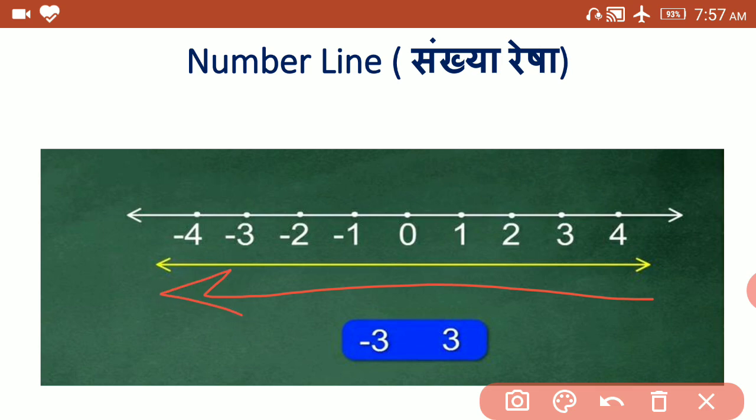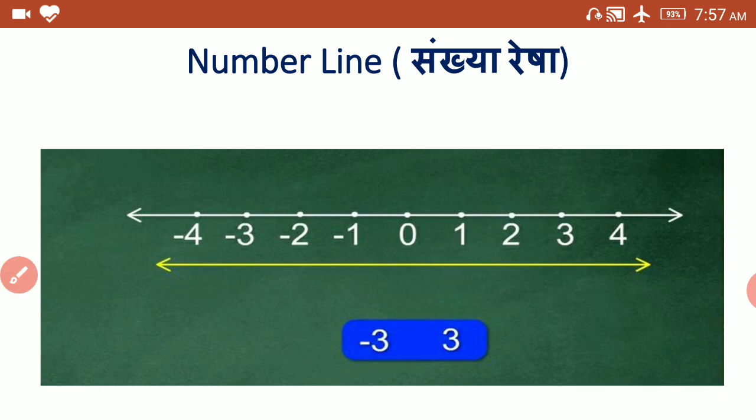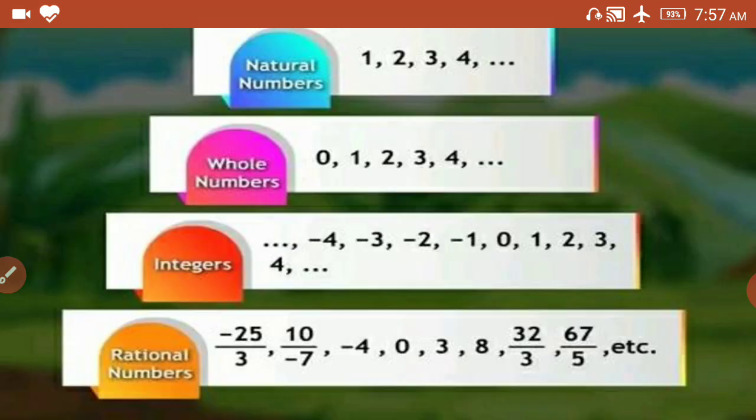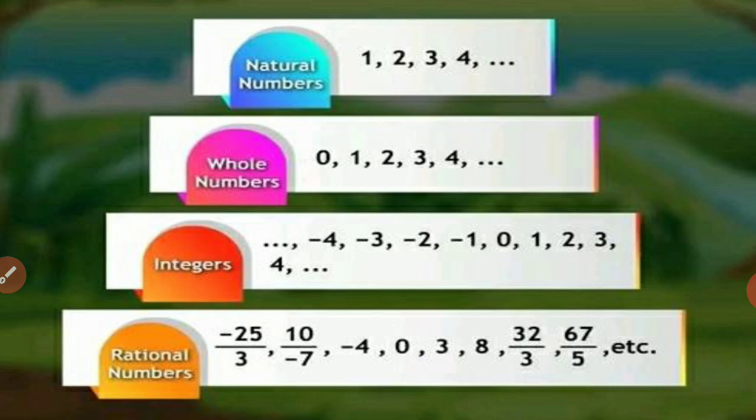On the number line shown before us, minus 4 is the smallest number — minus 4 is smaller than plus 4. And minus 3 is smaller than plus 3; plus 3 is greater than minus 3. I hope you will understand all about the number line, natural numbers, whole numbers, integers, and rational numbers.